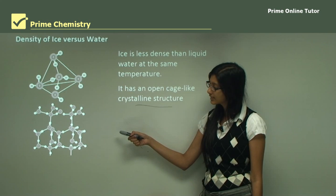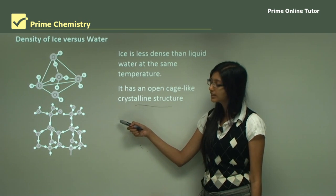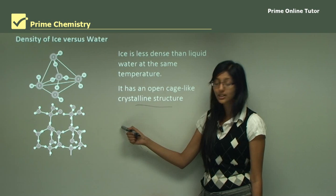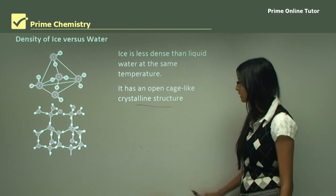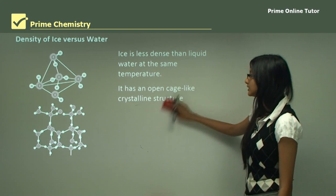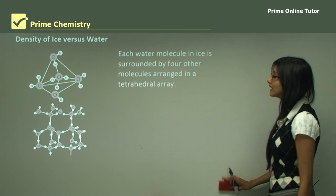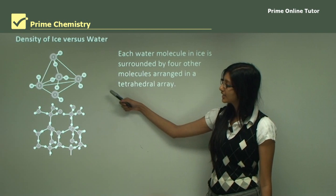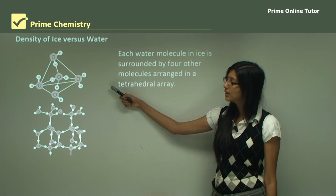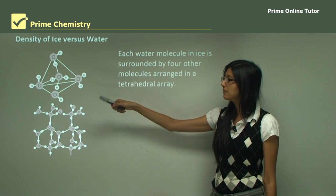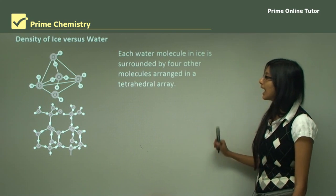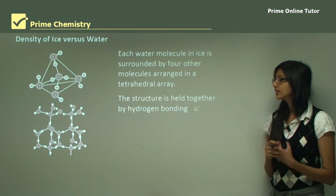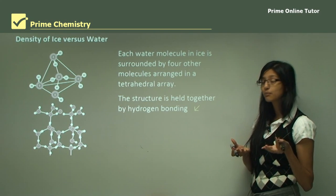The water molecules in ice need to form a hexagonal shape — a tetrahedral array. Each water molecule in ice is surrounded by four other water molecules: there is a water molecule in the middle, and four different water molecules surround it, all arranged in a tetrahedral array.